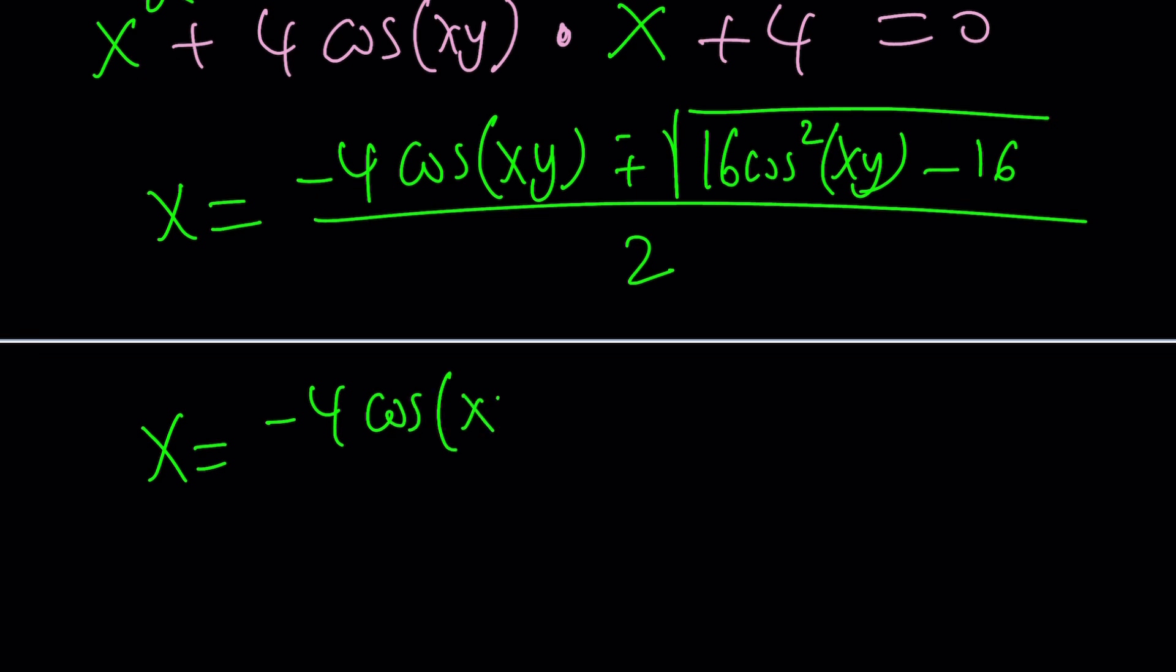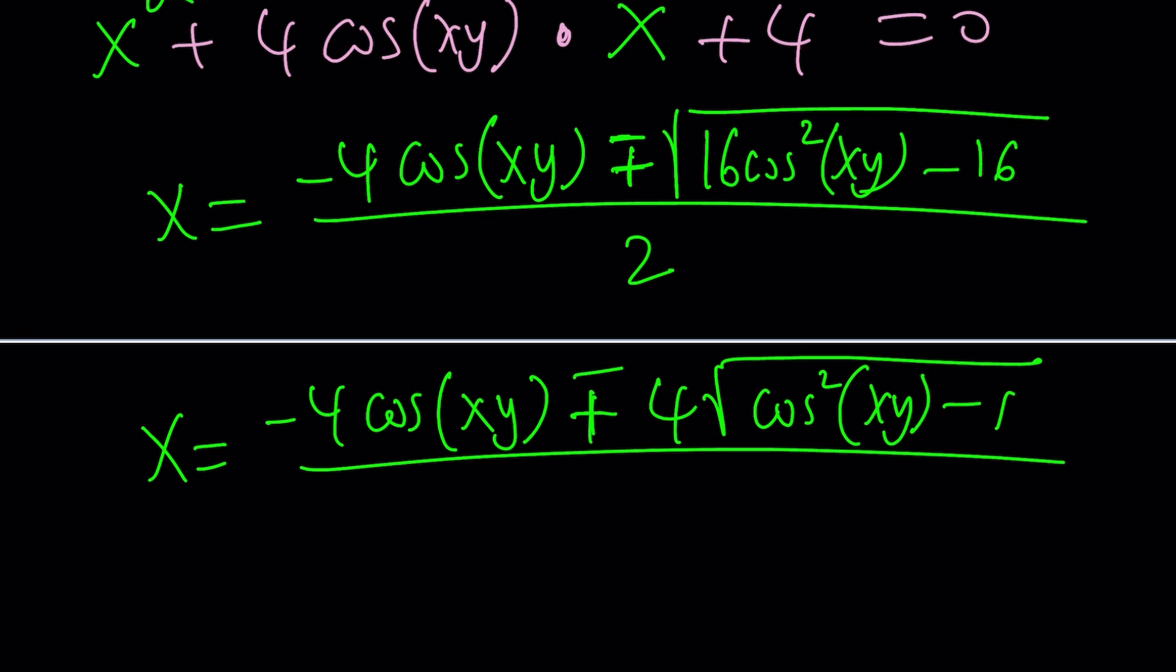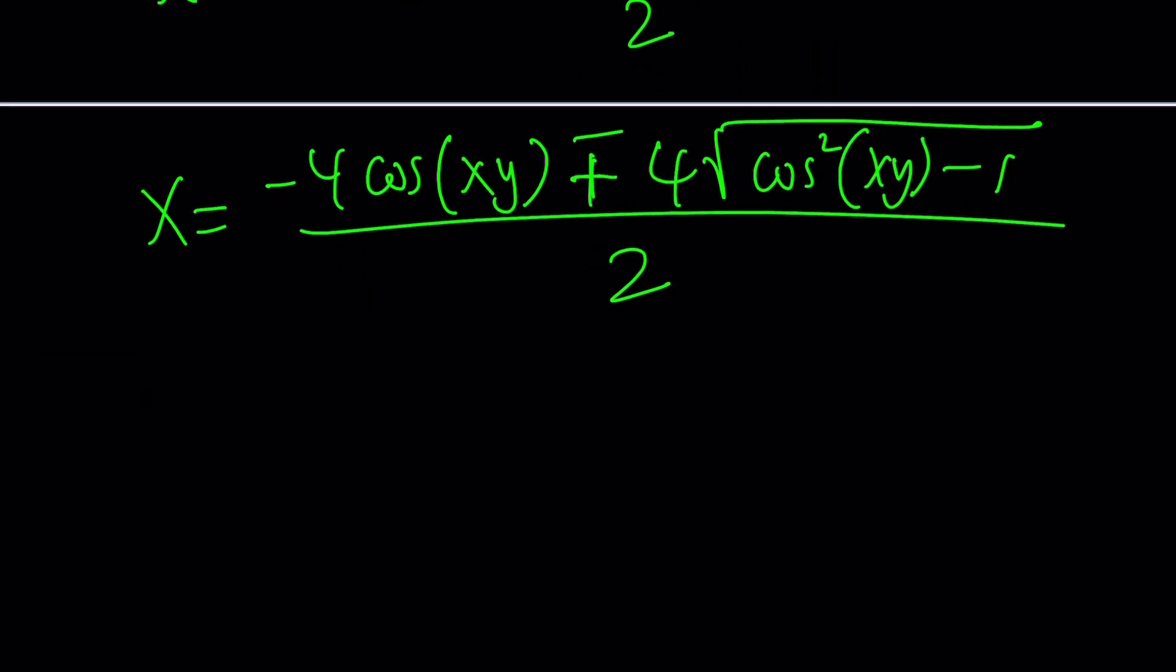But here's the thing. We have inside the radical 16, which we can factor out. So that'll be a 4. Inside, we're going to have cosine squared xy minus 1. Houston, uh-oh, we have a problem. And the problem is actually not real because it's about complex numbers. Cosine squared minus 1, what is that equal to?